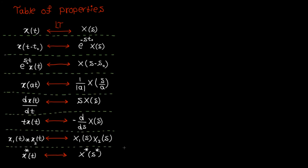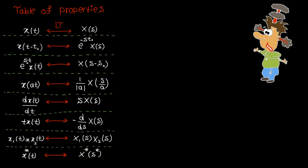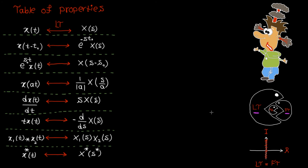Please don't memorize this. If you look at these properties carefully, you'll immediately realize they are very similar to the ones from the Fourier transform tables lecture. Remember the connection: the Laplace transform becomes the Fourier transform on the imaginary axis, i.e., if you replace s by jω. So the proof for each property is very similar to what I did in the Fourier transform tables.